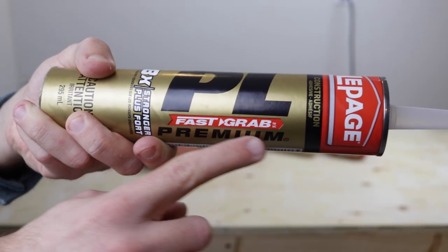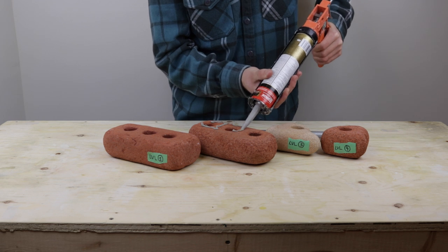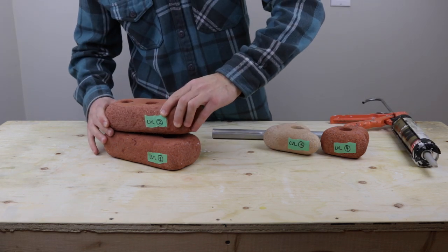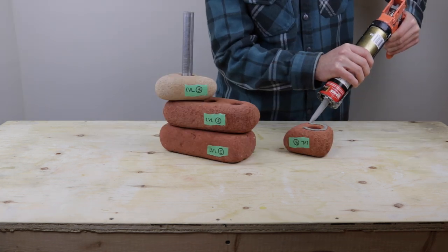To attach the bricks, I wanted to try PL Fast Grab. It sets up very quickly, and was perfect for holding the bricks in their desired orientation. And I made sure to use a small piece of conduit to maintain alignment as I stacked all of the bricks.